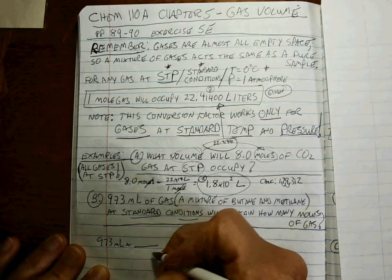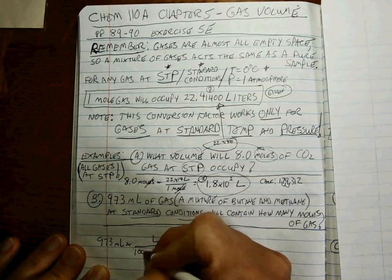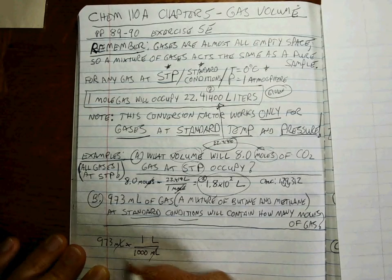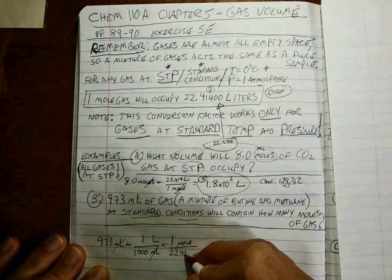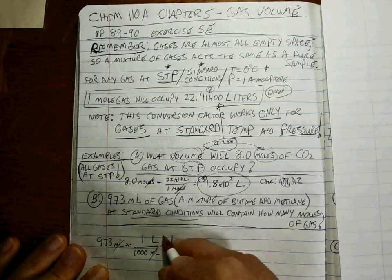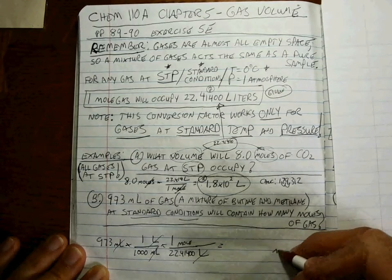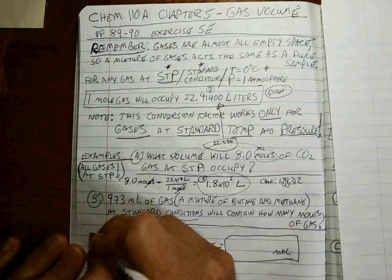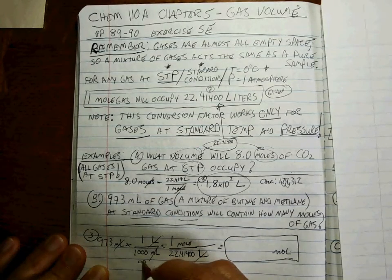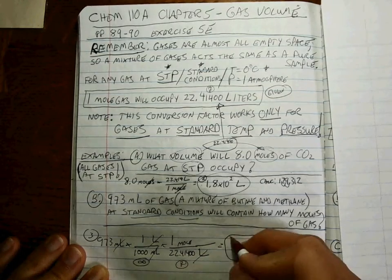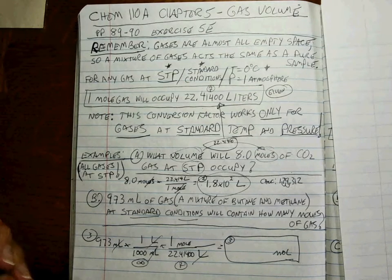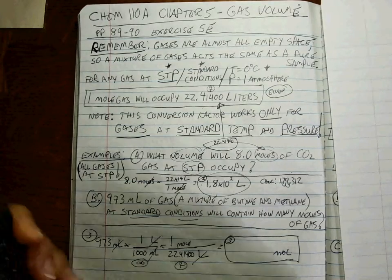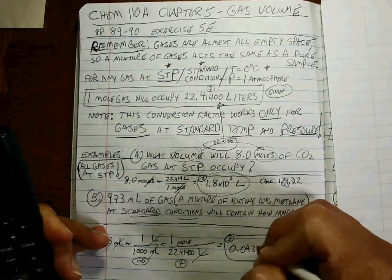That's a metric to metric conversion. Remember that there are 1,000 milliliters per one liter. Once we're at liters, we can get to moles easily. The one goes with the moles, 22.41400 goes with the liters. Liters cancels, moles is all we have left. Three sig figs here; metric to metric is an infinite number of sig figs, and that's seven, so the answer has three sig figs. We fire through: 973 divided by 1,000, divided by 22.414, and I get 0.0434 moles.